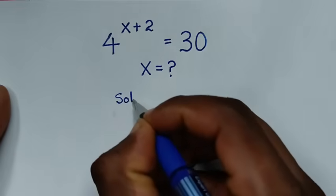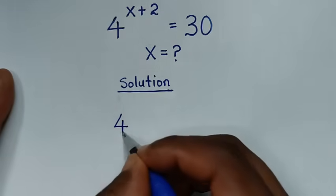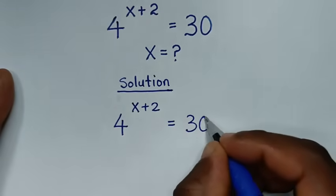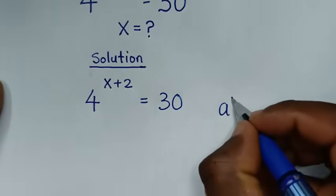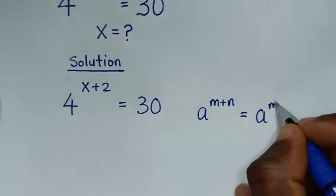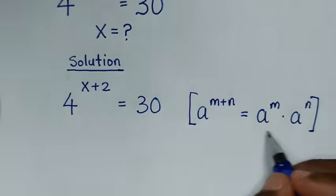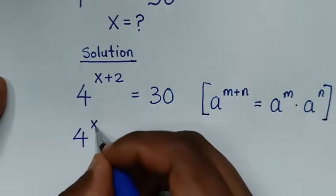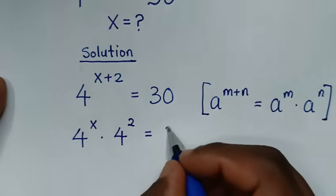Solution. From the problem, 4 power of (x plus 2) is equal to 30. The expression 4^(x+2) is in the form a^(m+n), which equals a^m times a^n. So we apply this form: it becomes 4^x times 4^2, which equals 30.